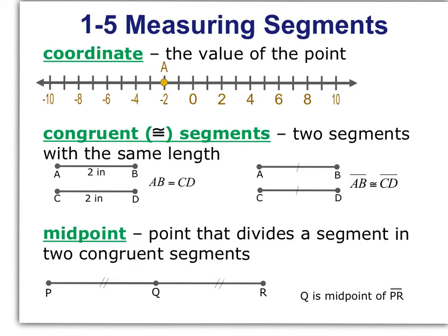Congruent segments are two segments with the same length, and remember we use the equal sign with the squiggly on top to mean congruence. So line segment AB is 2 inches, line segment CD is 2 inches, they're equal in length, therefore the two segments are congruent. And finally, a midpoint is a point that divides a segment into congruent segments. So looking at the diagram, segment PQ is congruent to segment RQ, and therefore Q is the midpoint of line segment PR.